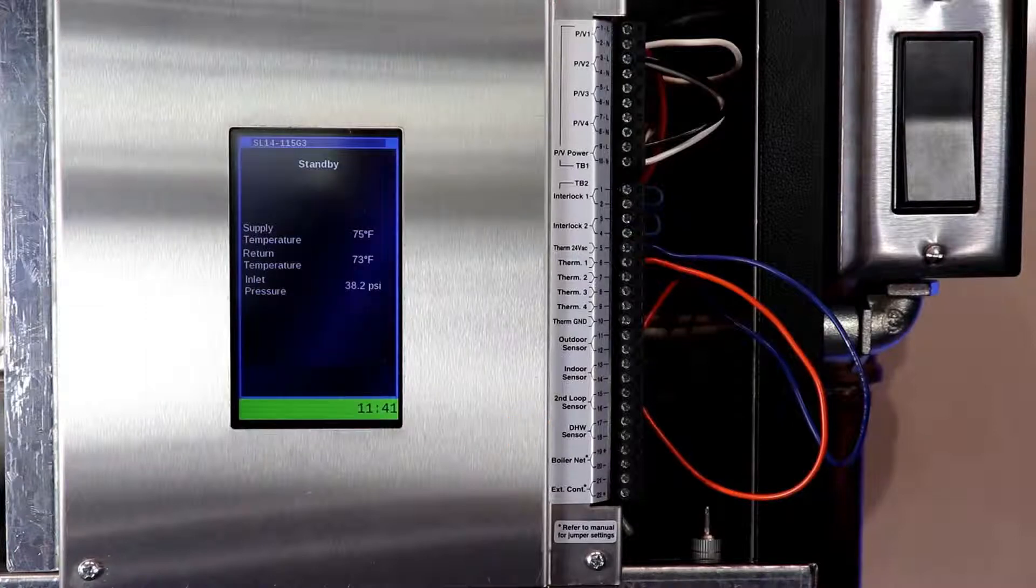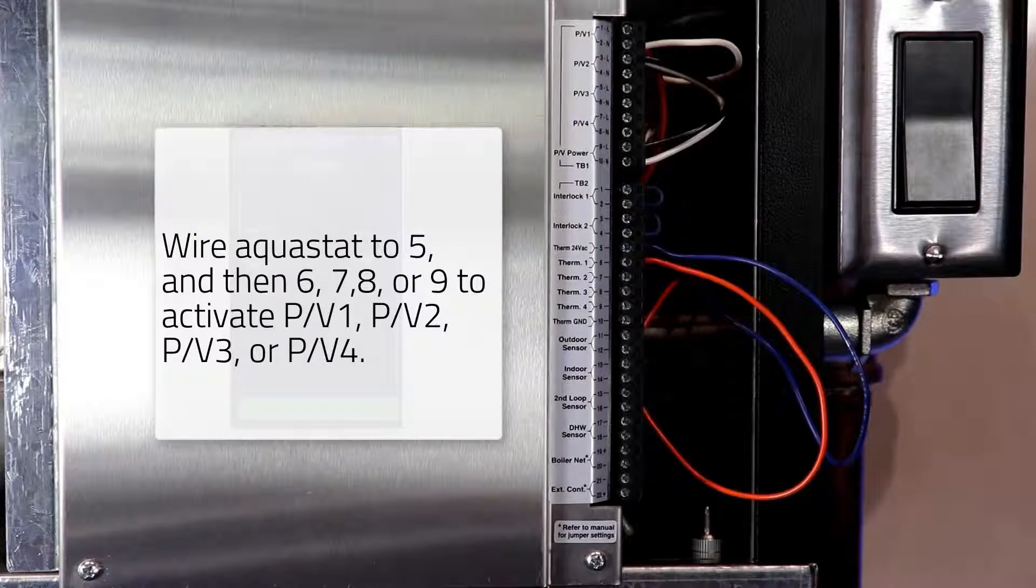If you are using an aquastat for your domestic call for heat, that will be wired into number 5 and the corresponding number 6, 7, 8, or 9, depending on the pump that you have wired to the TB1 terminal.